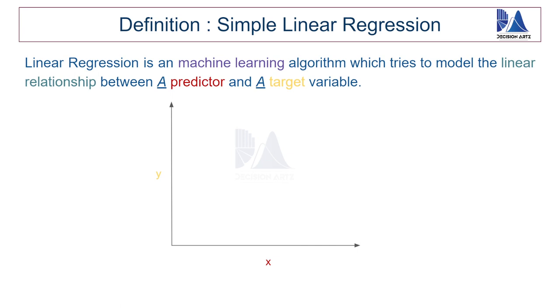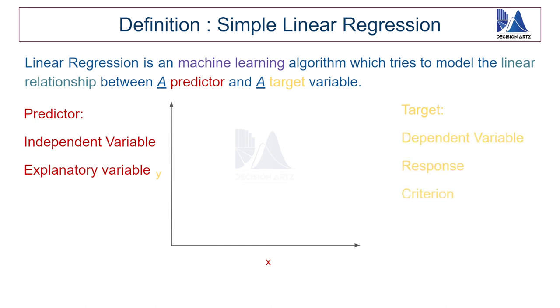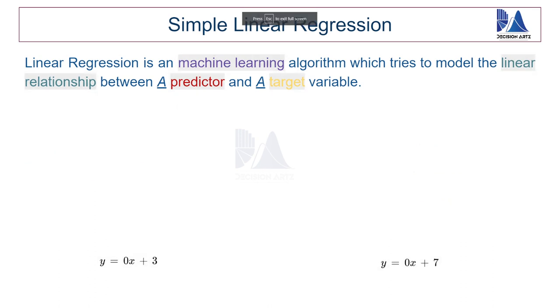There are various other names for the predictor and the target variable. For the predictor, it is also called independent variable or explanatory variable. And similarly the target variable is also called dependent variable, response variable or sometimes criterion. Alright, now that we know about the predictor and the target variable, now it's time to look at what we mean by linear relationship.